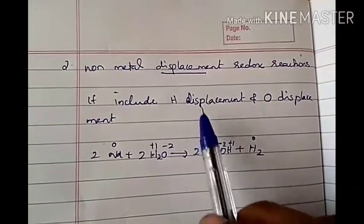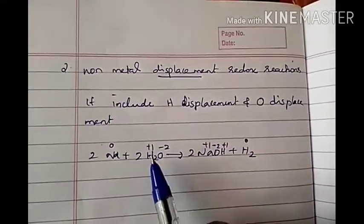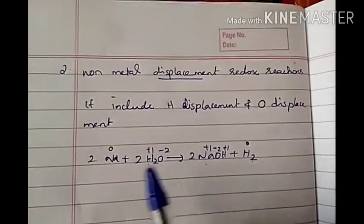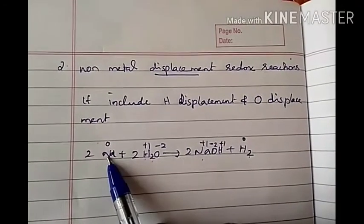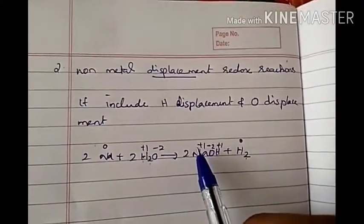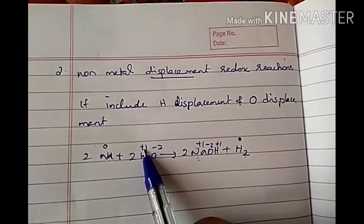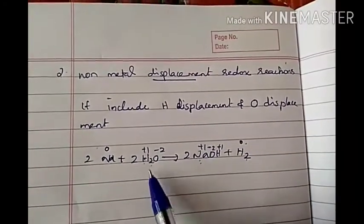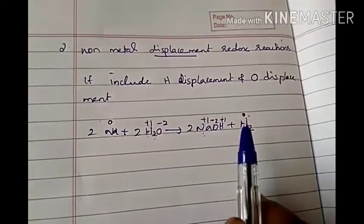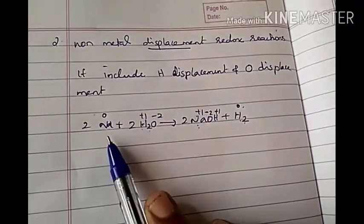Non-metal displacement includes hydrogen displacement or oxygen displacement. When sodium is placed in water, hydrogen is displaced and we get sodium hydroxide and hydrogen gas. This is a redox reaction because sodium's oxidation number increases from zero to plus one — so sodium is undergoing oxidation. Hydrogen's oxidation number was plus one and it decreases to zero — so hydrogen is undergoing reduction. So this is both a displacement reaction and a redox reaction, where a non-metal is displaced by a metal.